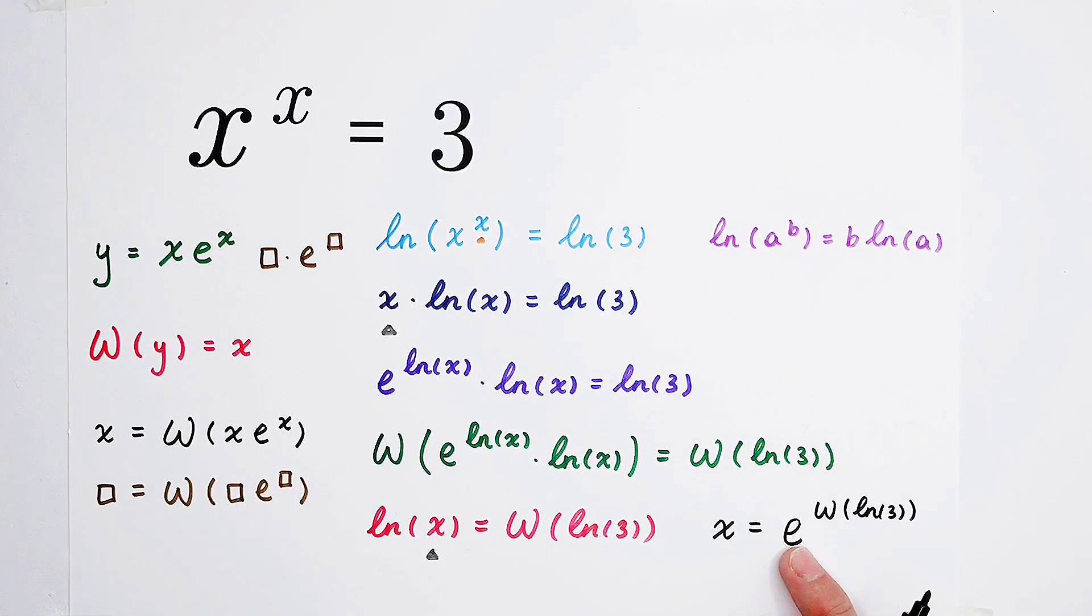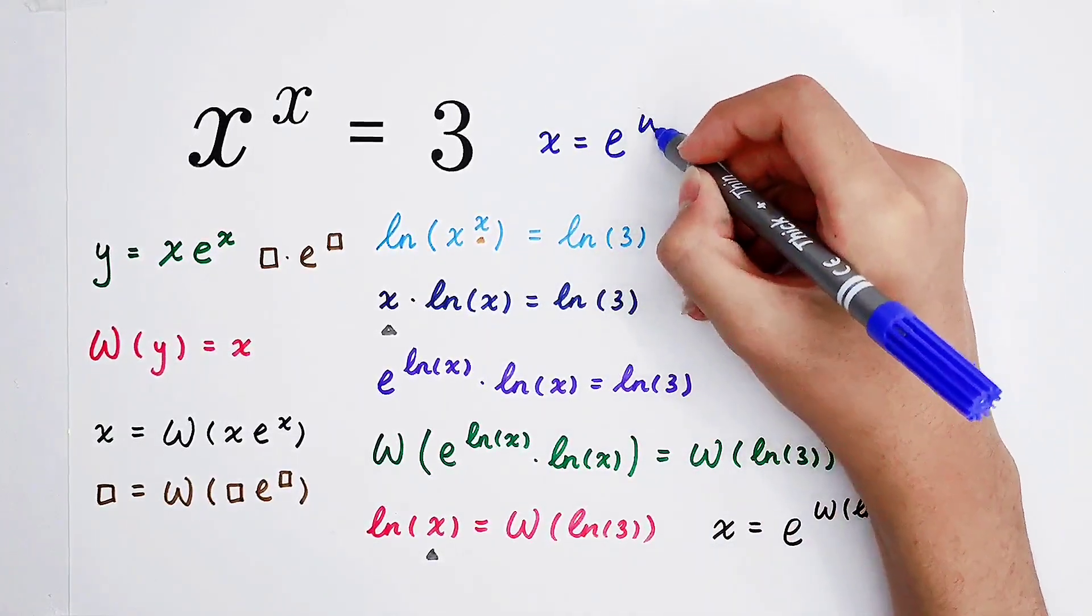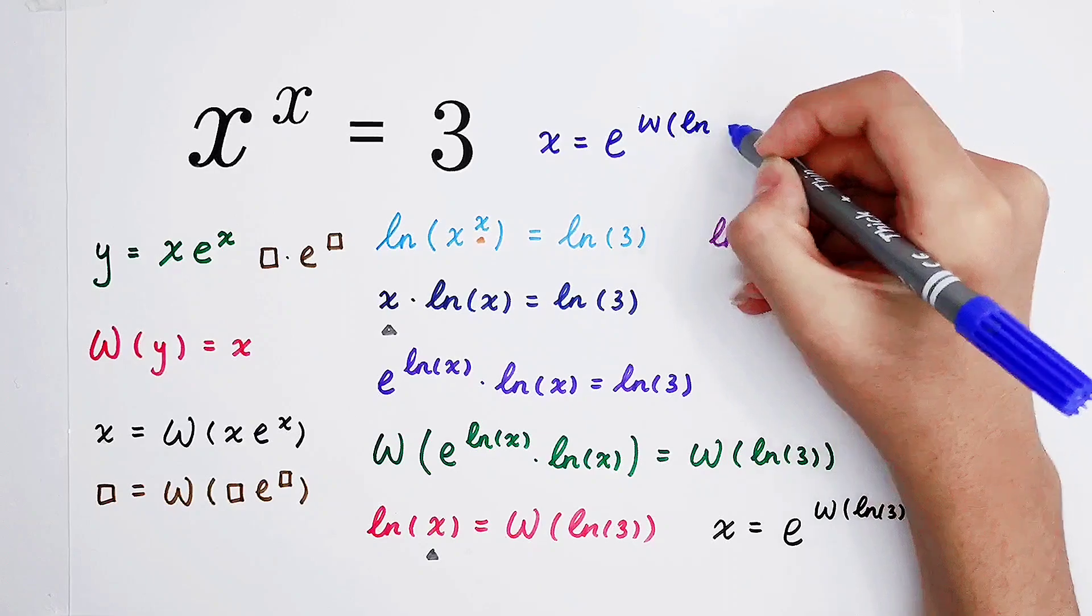e is the base, so x equals e to the power of W of the natural log of 3. So the answer is x equals e to the power of W of the natural log of 3.